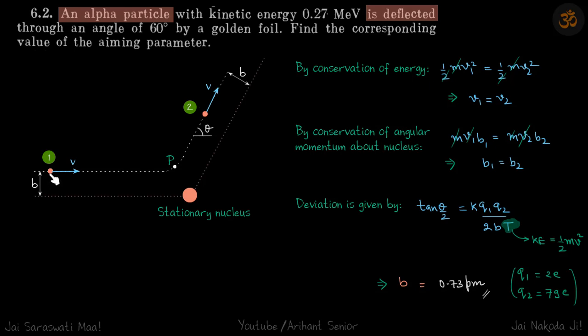First, the nucleus is stationary, so when this alpha particle deflects back, it's not transferring any energy to the nucleus. The energy of the alpha particle is constant. From conservation of energy: ½mv₁² = ½mv₂², which means v₁ = v₂. Its initial energy equals its final energy.